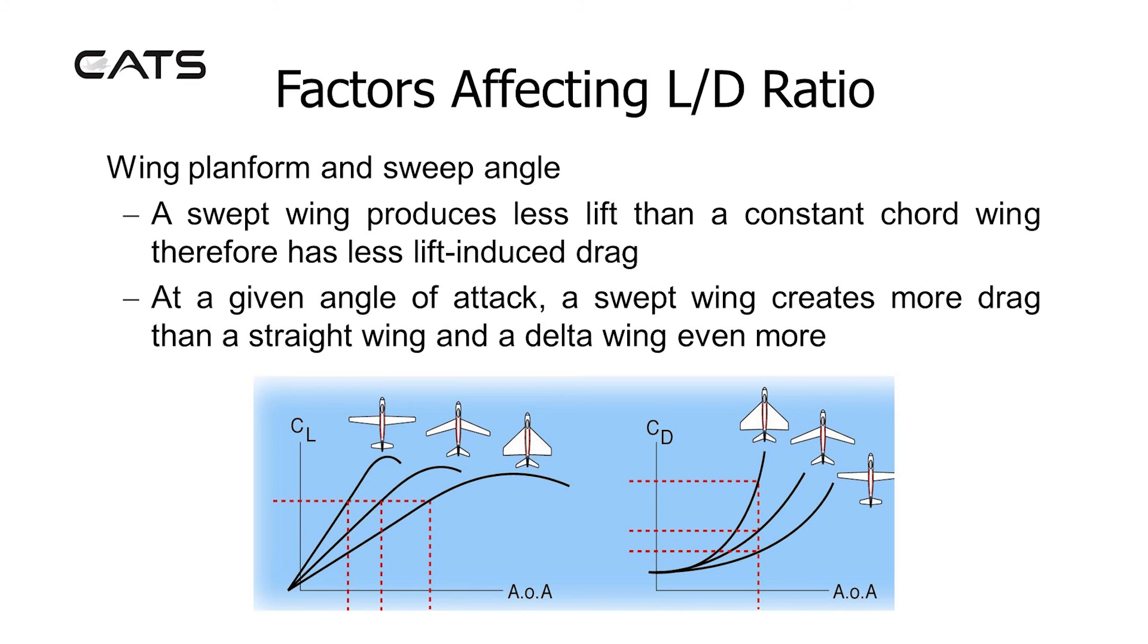Factors affecting the lift to drag ratio. Wing planform and sweep angle. A swept wing produces less lift than a constant chord wing, therefore having less lift-induced drag. At a given angle of attack, a swept wing creates more drag than a straight wing, and a delta wing even more.